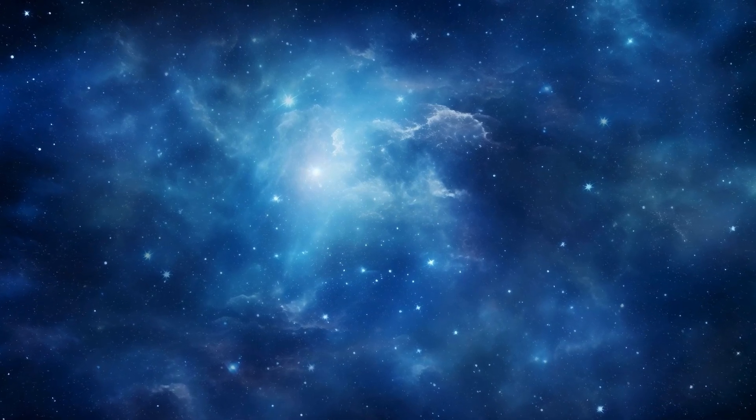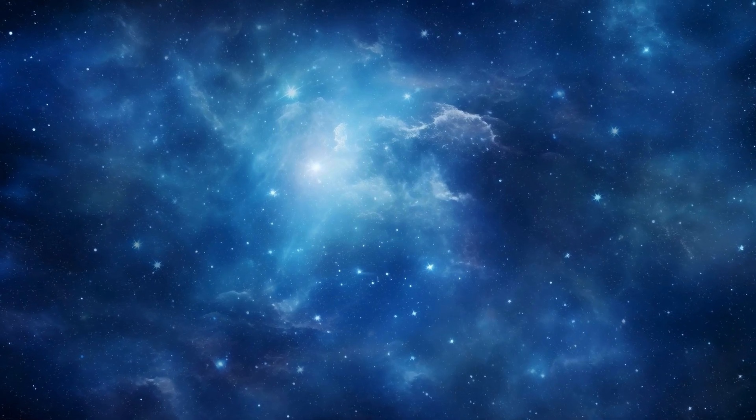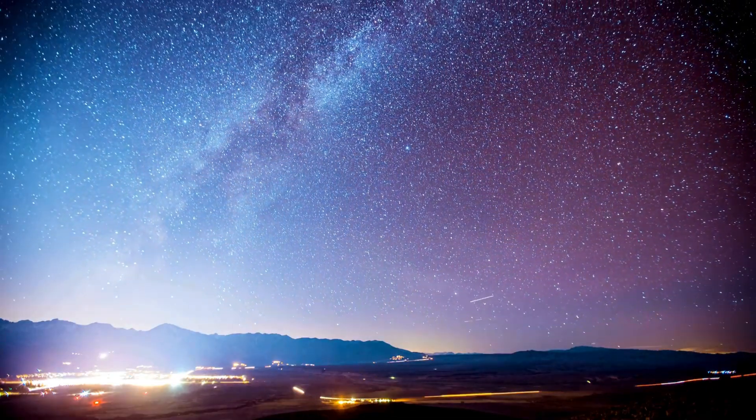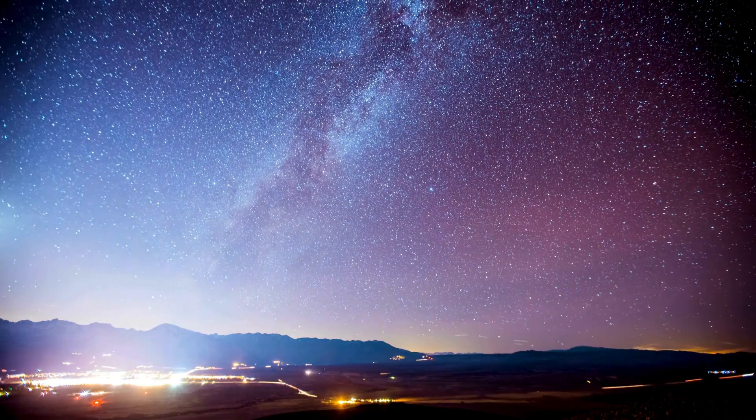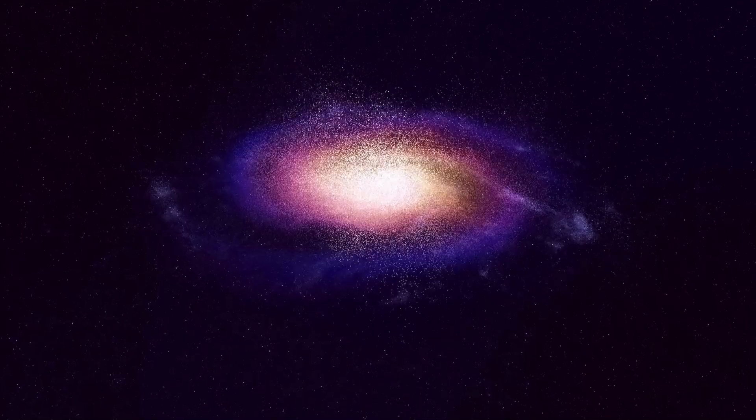The two stars, Rigel Cantoris and Alpha Centauri b, form a binary system known as Alpha Centauri a and b. These G and K type stars appear as one star in the constellation Centaurus and are the third brightest stars in our night sky, with a peak brightness of under 2.7.